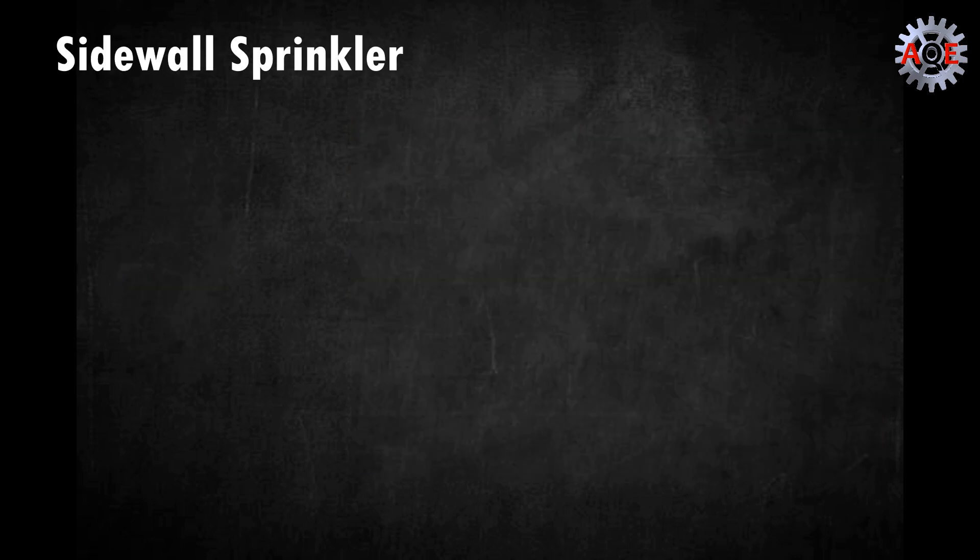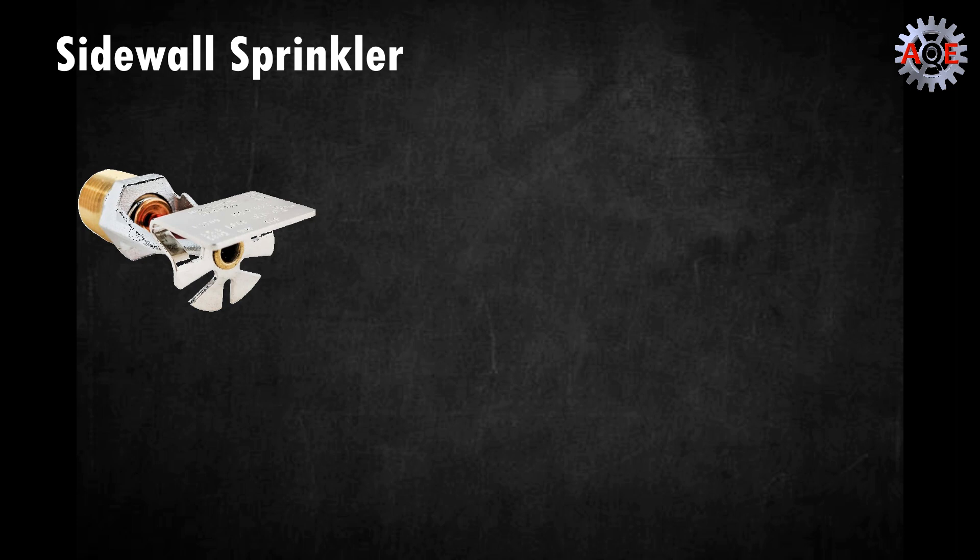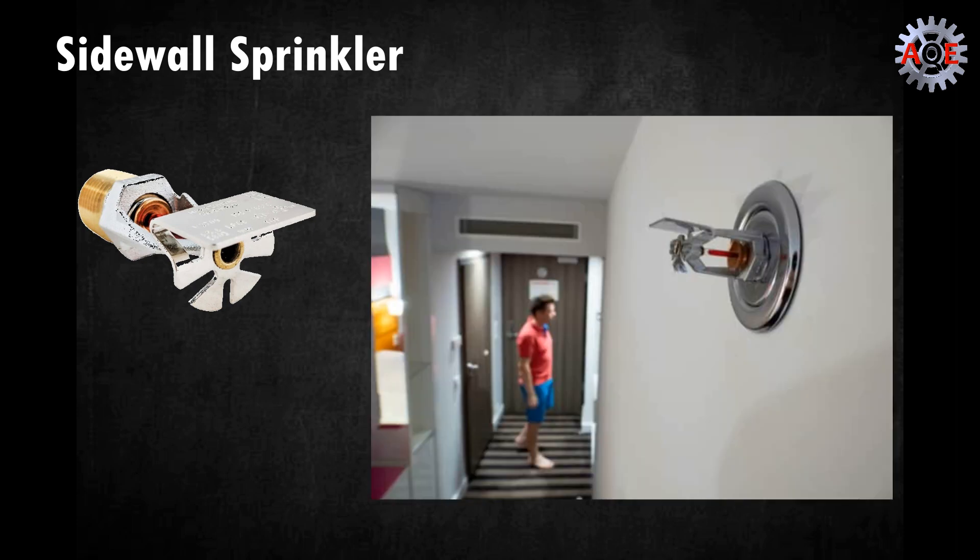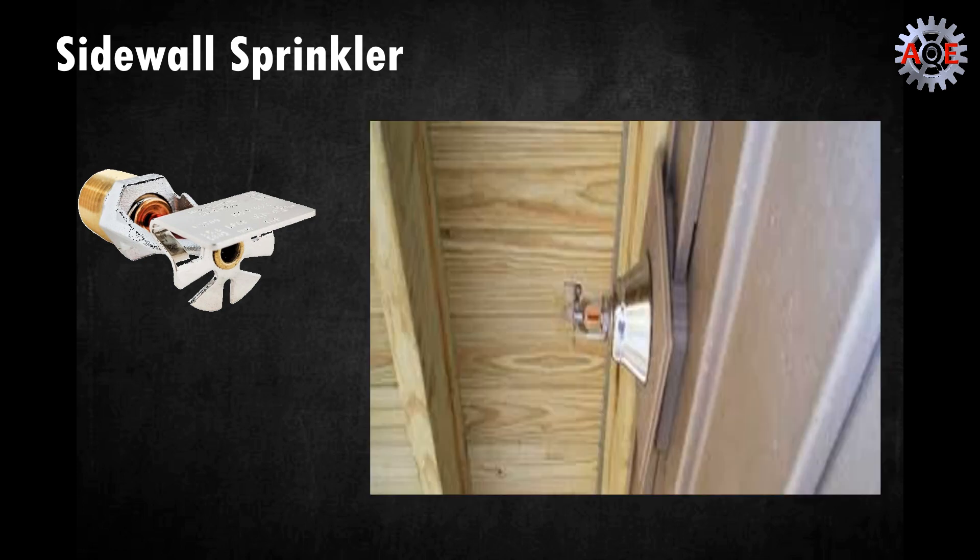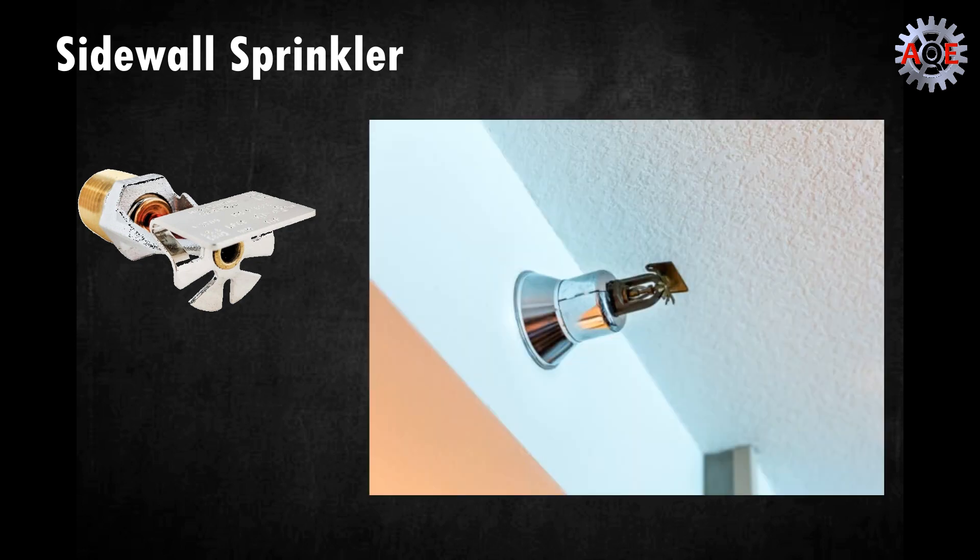Sidewall fire sprinkler heads are generally used in tight spaces such as hallways or small rooms. They only have half of a deflector so they can spray water in a half circle shape, which helps to cover the entire area. Generally, you will want to install sidewall sprinklers in the wall either along or under a beam.